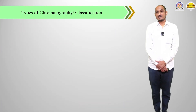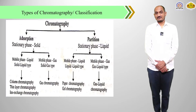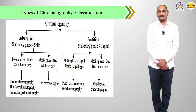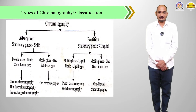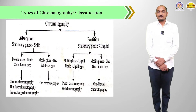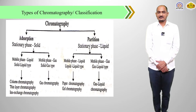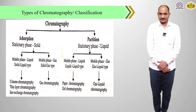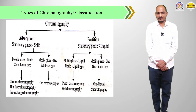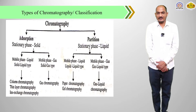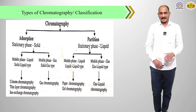The next important point is the classification of chromatography technique. Chromatography is classified into two classes: adsorption chromatography and partition chromatography. In adsorption chromatography, the stationary phase is a solid. When the stationary phase is solid and the mobile phase is liquid, that is solid-liquid type chromatography. When the stationary phase is solid and the mobile phase is gas, that is solid-gas type. An example of solid-gas type is gas chromatography, while examples of solid-liquid type are column chromatography, thin layer chromatography, and ion exchange chromatography.